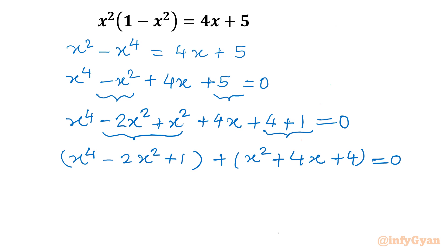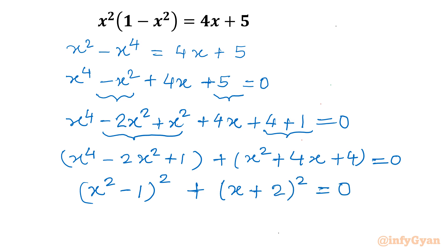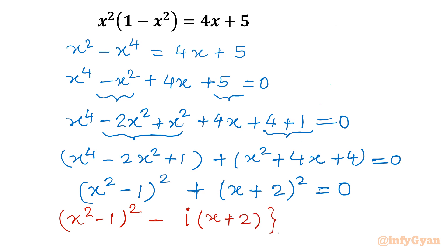Now you can see the first bracket is (x squared minus 1) whole squared, and the second bracket is (x plus 2) whole squared. So we now have a sum of two squares. To solve this kind of equation, we will write the sum of two squares in the form of a difference of two squares.